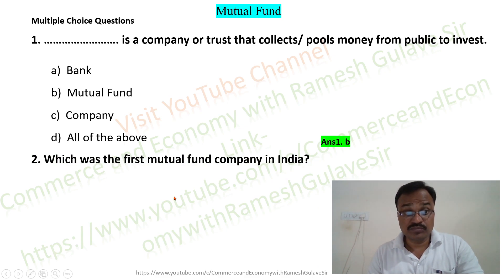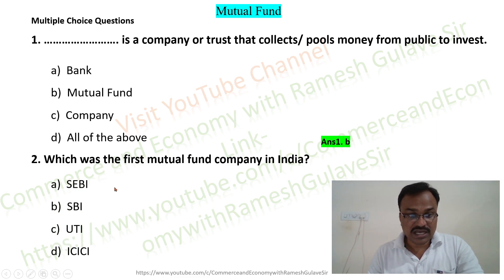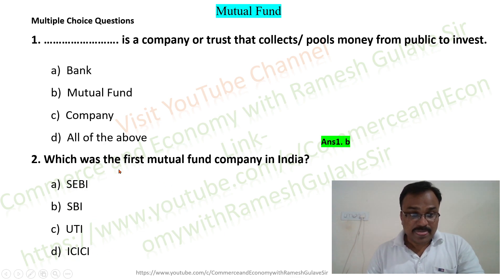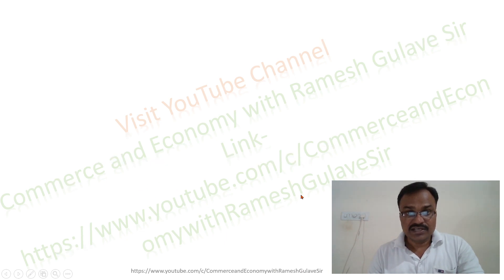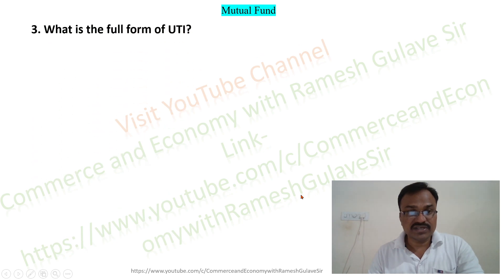Let us move on to the next question, which asks: which was the first mutual fund company in India? The options are SEBI, ACBI, SBI, UTI, and ICICI. We know that Unit Trust of India, that is UTI, was the first mutual fund company in India, so option C is the right answer.